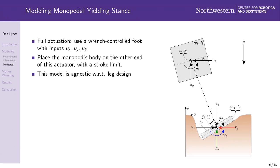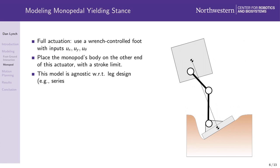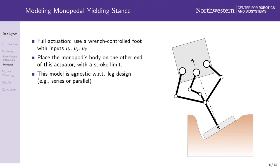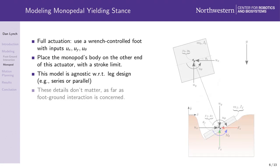A benefit of this simple model is that it is agnostic with respect to leg design. The leg connecting the body to the foot could be anthropomorphic with hip knee and ankle joints, or it could be a parallel mechanism. The point is these details don't matter as far as foot ground interaction is concerned, and that's what this simple model allows us to focus on.